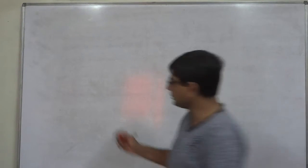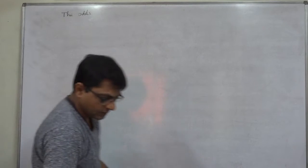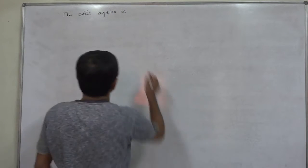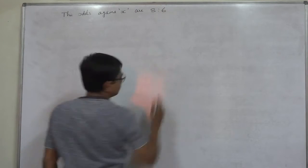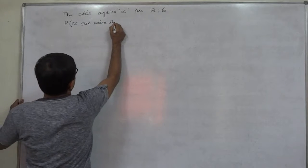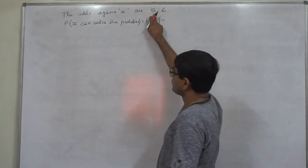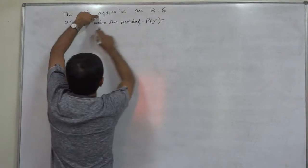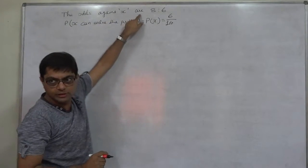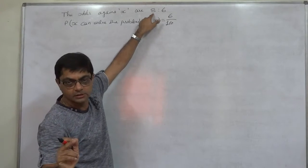The odds against X are 8 is to 6. The probability that X can solve the problem — P(X) — will not be 8 upon 14, but it will be 6 upon 14. If the wording says 'the odds against X,' the first number stands for cases favorable to failure of X, not success of X.